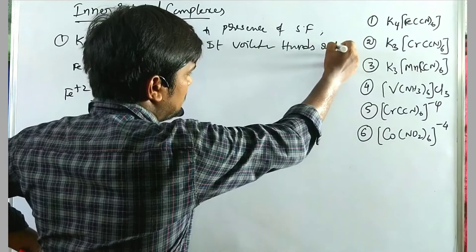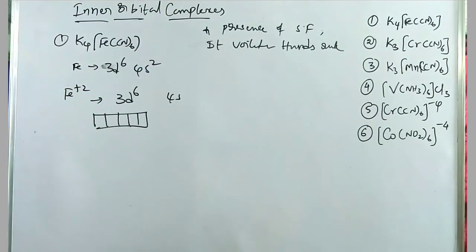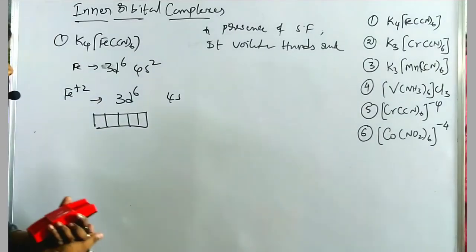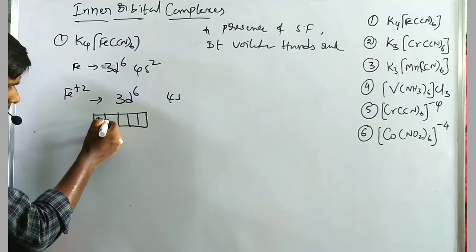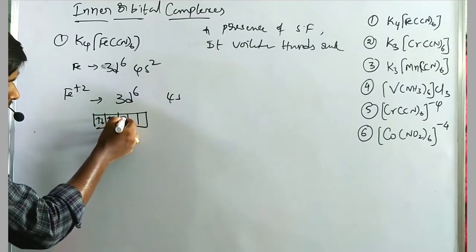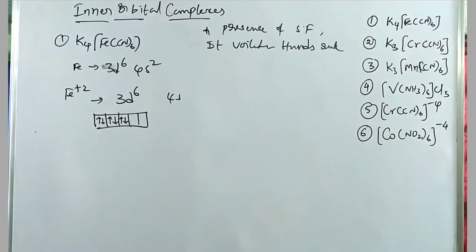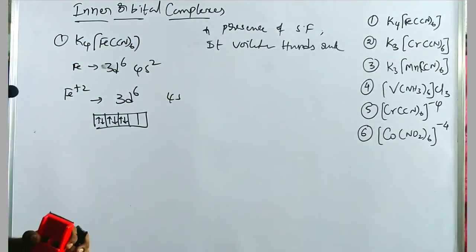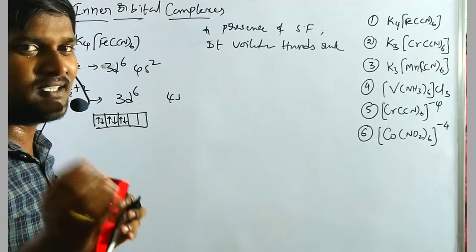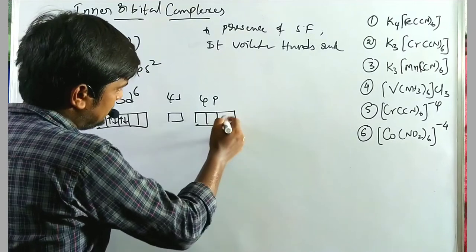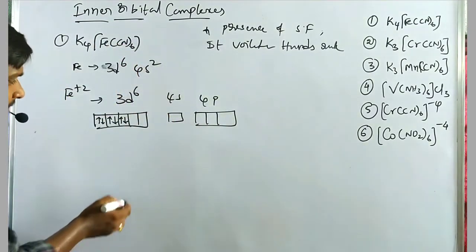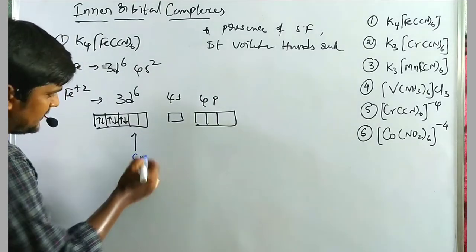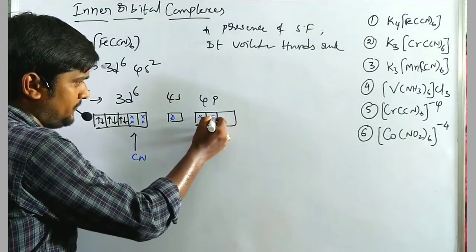Since coordination number is 6, six vacant orbitals are required. After pairing the 3d⁶ electrons into three paired orbitals, two 3d orbitals become vacant along with 4s and three 4p orbitals. According to Pauling, strong-field ligands form covalent bonds with the metal. Six CN⁻ ligands donate their electron pairs into these vacant orbitals.